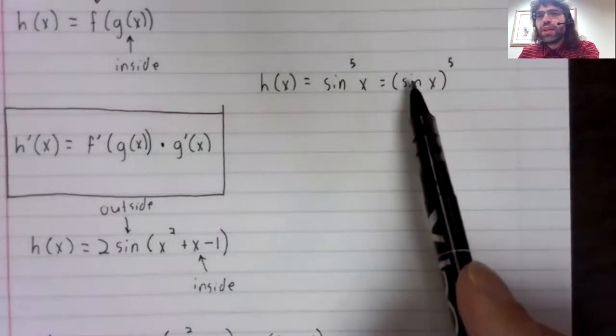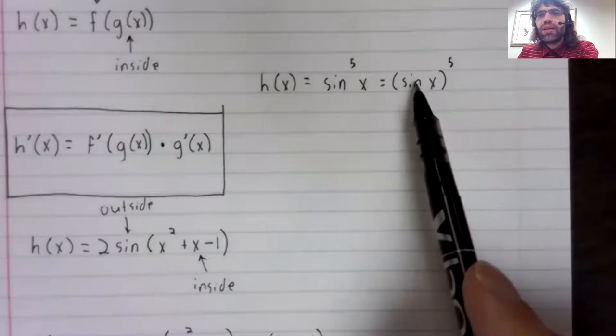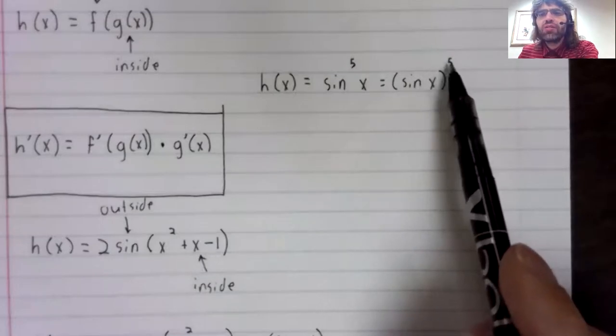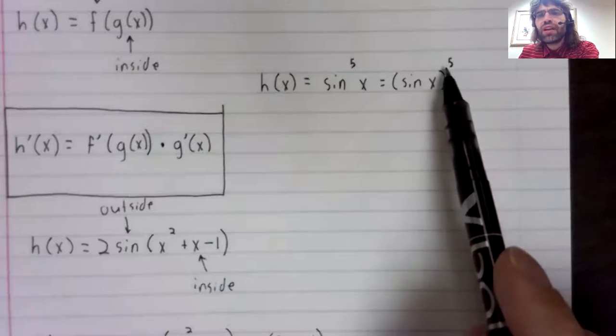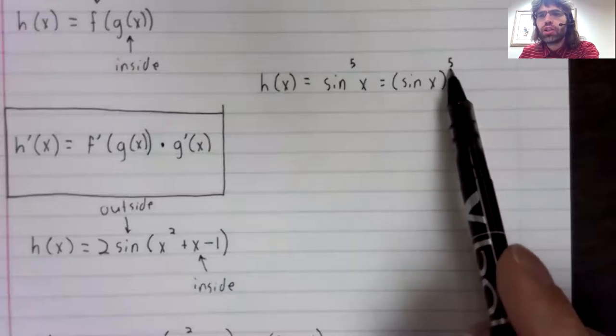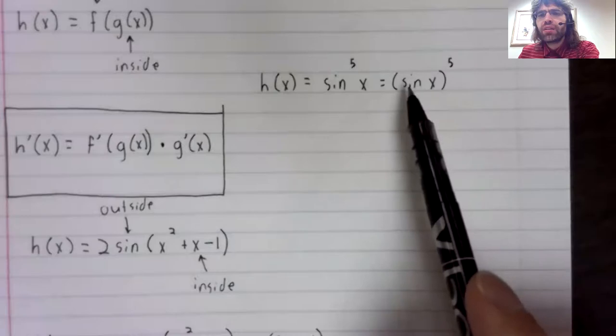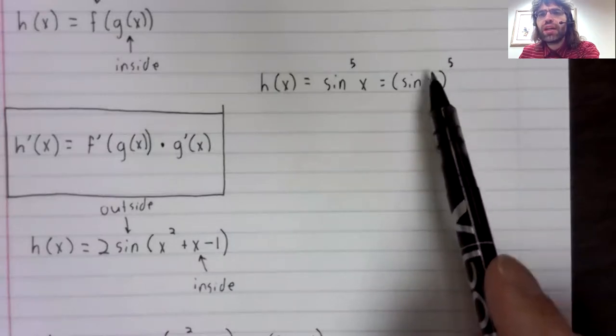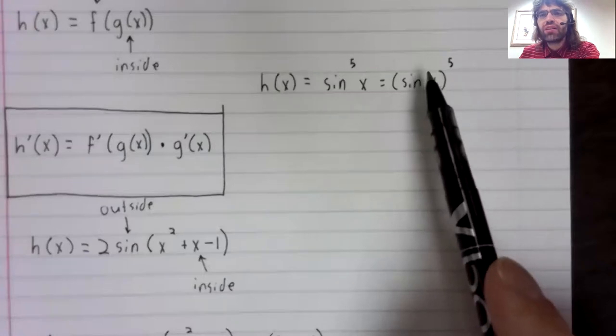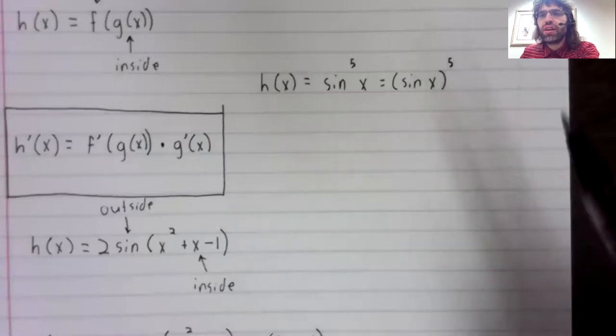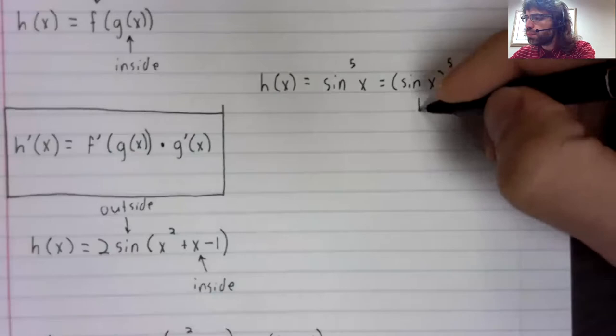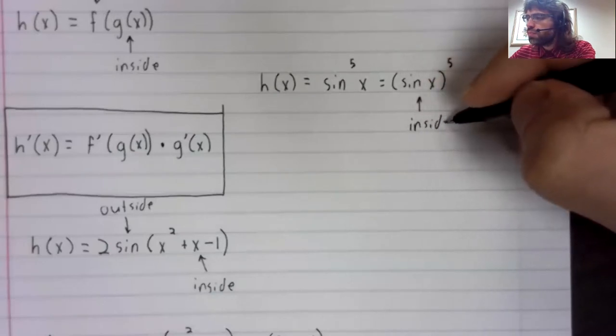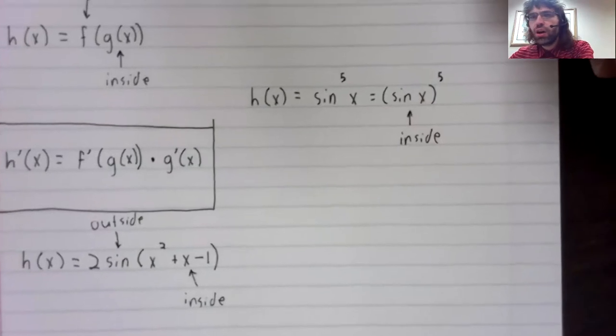What do we have here? Well, we have something raised to the fifth. So we sort of have a power function. Except instead of x raised to the fifth, we have the sine of x raised to the fifth. This is a composition.